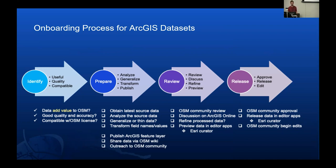We also definitely want to make sure that it's good quality data, that it's accurate. We've only had a couple that we just had to outright say no to because the quality wasn't there. And we want to make sure that it adds value to OSM — there are cases where we get a suggestion for a layer, we go look at OpenStreetMap and 98% of it is already clean, so in those cases we just don't pursue it.